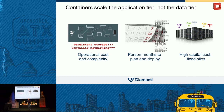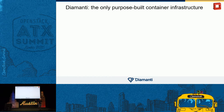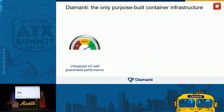We think there is a better approach. At Diamante, we took a fresh look at what it means to run containers at scale. We purpose-built what I believe is the only purpose-built converged infrastructure for containers, allowing you to rapidly deploy containers into production. The first thing we offer is virtualized I/O — network and storage for every container in your environment — so you can guarantee the performance and scale you get for each of your containerized workloads.